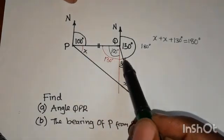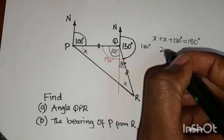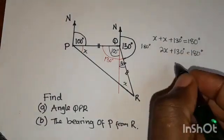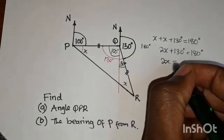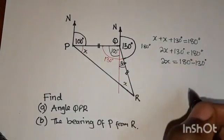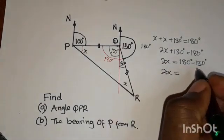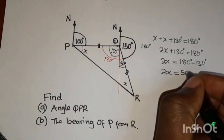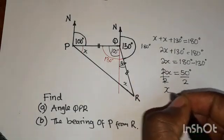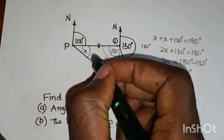When you add this angle plus this angle plus this angle, you get 180 degrees. So 2X plus 130 degrees equals 180 degrees. Therefore 2X equals 180 minus 130, which gives 50 degrees. Dividing both sides by 2, X equals 25 degrees. So this angle here is 25 degrees.